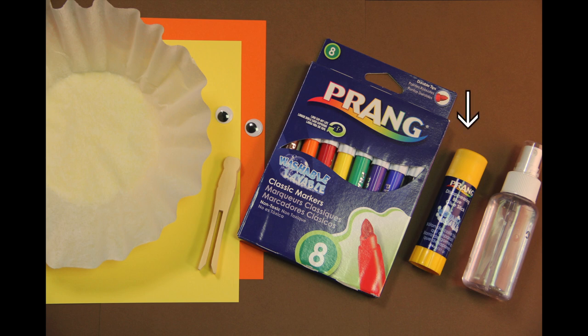Next is a Prang glue stick, a coffee filter, a clothespin, two googly eyes, any shape that you'd like, and a small spray bottle filled with water.